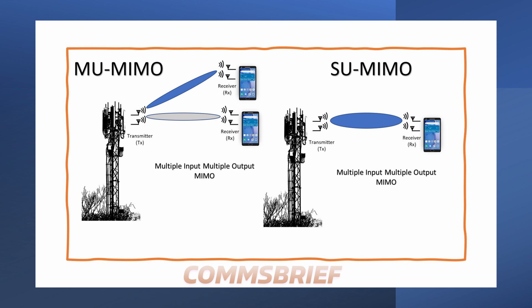Hi guys, in today's video we will talk about the difference between Multi-User MIMO, MU-MIMO, and Single-User MIMO, SU-MIMO. Multi-User MIMO and Single-User MIMO are two antenna technologies that are used in modern wireless networks including 4G and 5G mobile networks. While both are part of the overall multiple input-multiple output MIMO technology, there are key differences between the two that we will cover in this video.